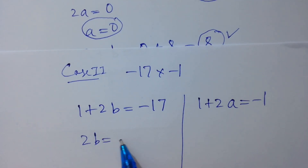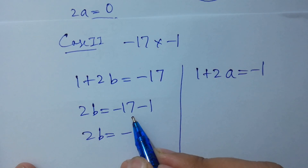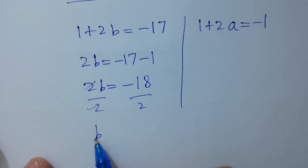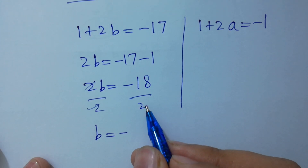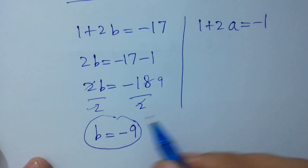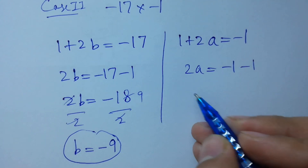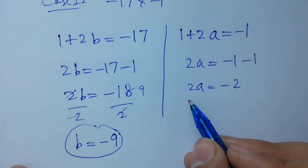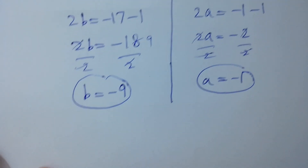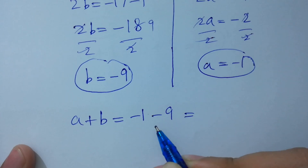Solving: 2b equals minus 17 minus 1, which is minus 18; dividing by 2 gives b equals minus 9. For a: 2a equals minus 1 minus 1, so 2a equals minus 2; dividing by 2 gives a equals minus 1. Therefore a plus b equals minus 1 plus minus 9.